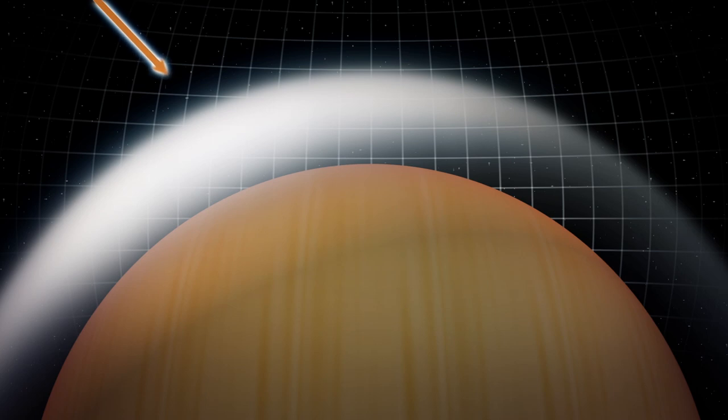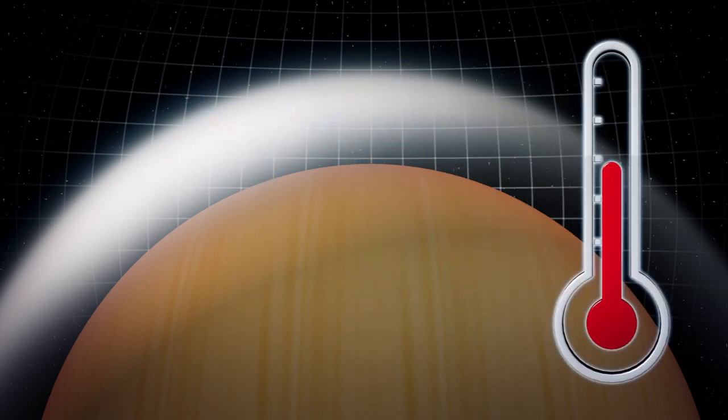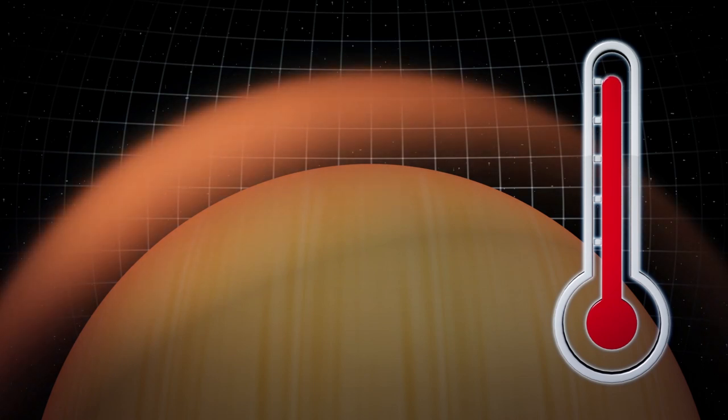Due to leftover energy from its formation and a powerful greenhouse effect, the temperature on HR 8799e is an inhospitable 1,000 degrees Celsius, or about 1,616 Fahrenheit.